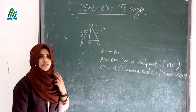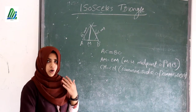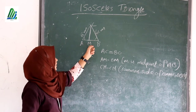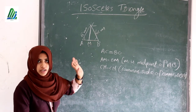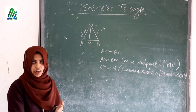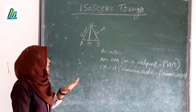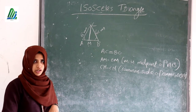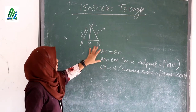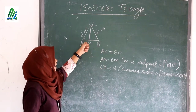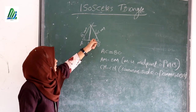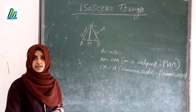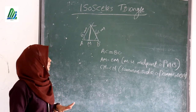From this we can learn: if three sides of one triangle are equal to the three sides of another triangle, then the angles opposite to the equal sides are also equal. Here, the three sides of triangle AMC are equal to the three sides of triangle BMC, and the angles opposite to the equal sides are also equal.